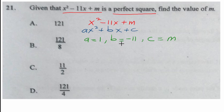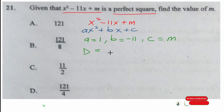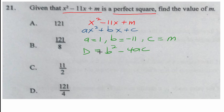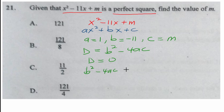Now, recall the discriminant of a quadratic expression: D equals b squared minus 4ac. The key idea is that if a quadratic expression is a perfect square, then the discriminant equals 0. So b squared minus 4ac must equal 0. That is the condition we will use to solve for m.